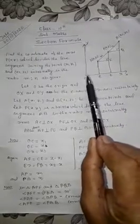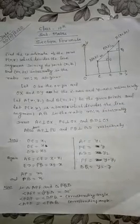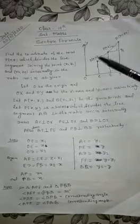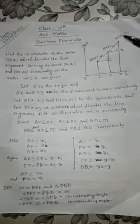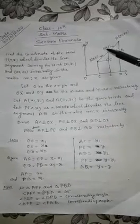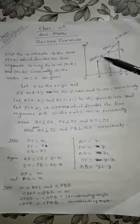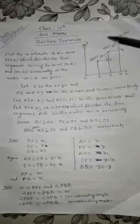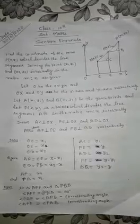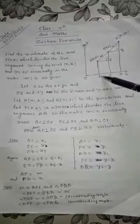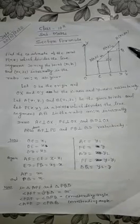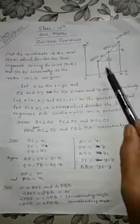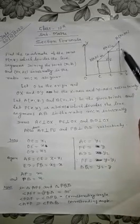Let O be the origin, and OX and OY be the x-axis and y-axis respectively. Suppose AB is a line segment, the coordinate of A is (x1, y1) and the coordinate of B is (x2, y2). Let P be a point with coordinates (x, y) which divides AB in the ratio M:N internally. We have to find the coordinate of P, meaning the values of x and y. We draw AC perpendicular on OX, PE perpendicular on OX, and BD perpendicular on OX. Also, we draw AF perpendicular on PE and PQ perpendicular on BD.